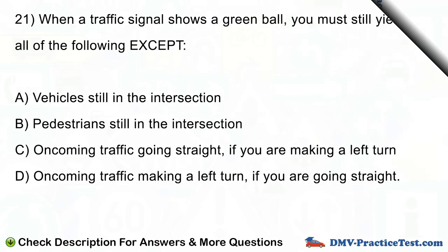Question number 21. When a traffic signal shows a green ball, you must still yield to all of the following except. A. Vehicles still in the intersection. B. Pedestrians still in the intersection. C. Oncoming traffic going straight, if you are making a left turn. D. Oncoming traffic making a left turn, if you are going straight.